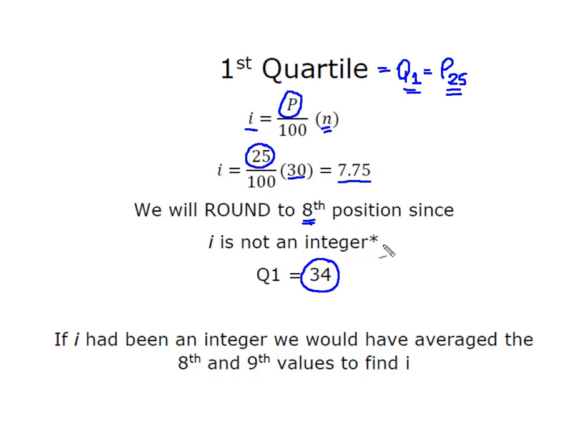If i had been an integer, a whole number, I would have averaged the 8th and the 9th values to find i. So if when I did this piece of math, it had come out to be a whole number, then I would simply take the 8th and the 9th value, average them together, add them together, divide by 2, and that would be my indicator for the first quartile.